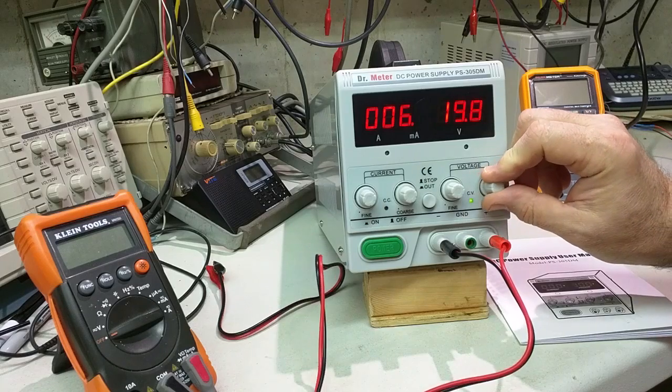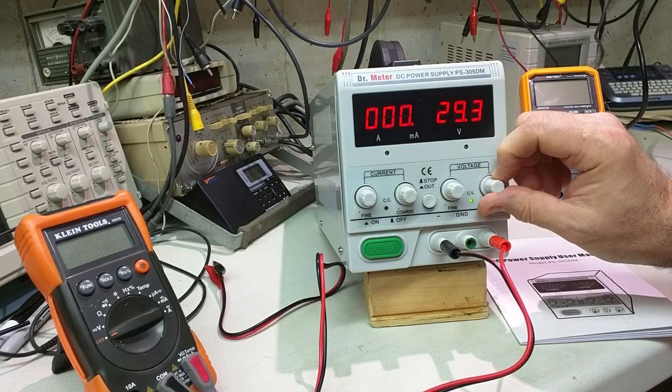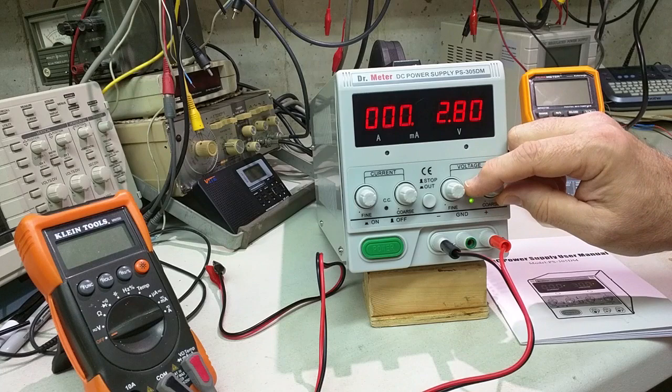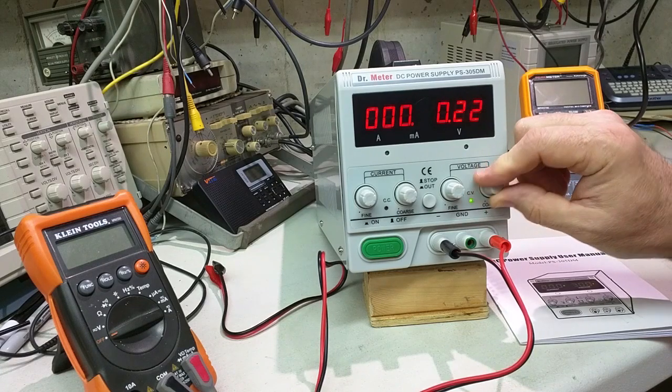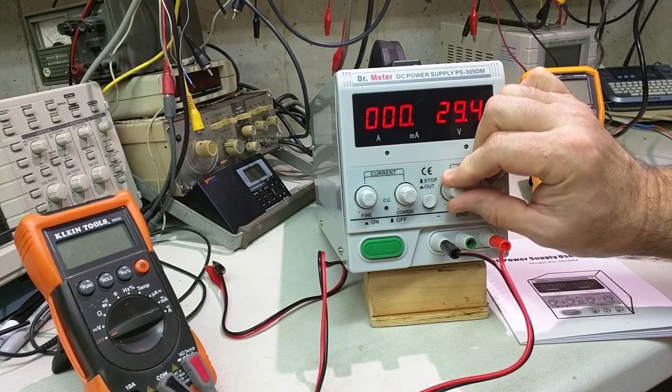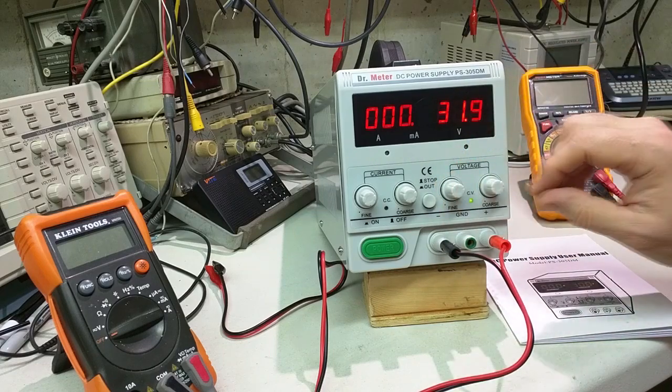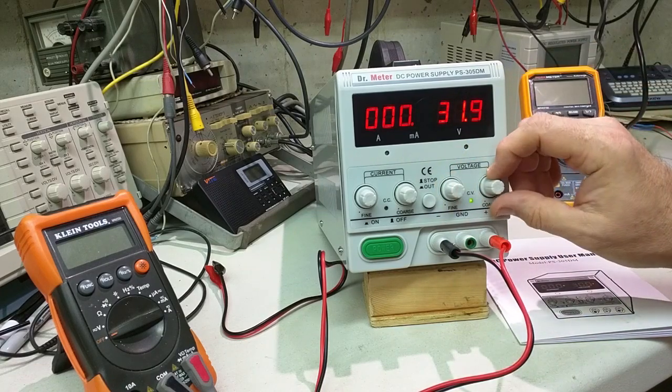Now you can see I can turn the coarse and I could change the voltage here, drop it down or increase it. So when you put the fine all the way to the right, the coarse shows 31.9.